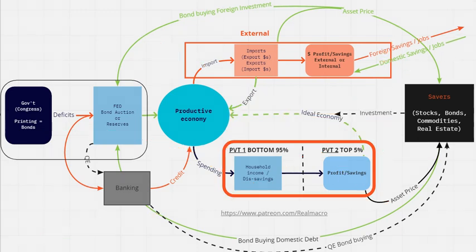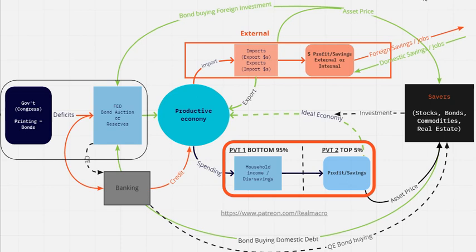So MMTers are like Christians against Christ. That's what they are. They claim, oh, we're going to save the poor. We're going to save the poor. We're just going to deficit spend and save the poor. When all they're doing is saving the rich.